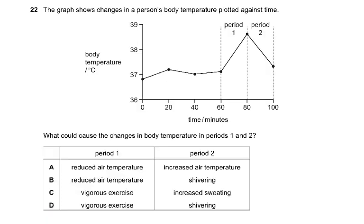Question number 22: the graph shows changes in a person's body temperature plotted against time. It's asking about period one, in which the temperature is rising from 37 to nearly 39 degrees, and period two, in which the temperature is returning to normal.